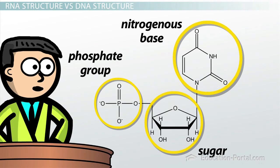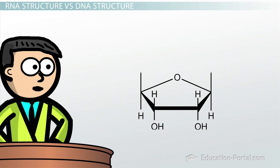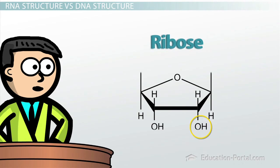One difference between DNA and RNA is the sugar. Whereas the sugar in DNA is deoxyribose, the sugar in RNA is ribose. I won't dwell on the exact chemical difference between the two sugars, but ribose has one extra hydroxyl group compared to deoxyribose.